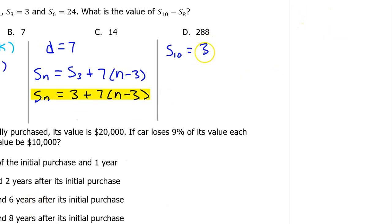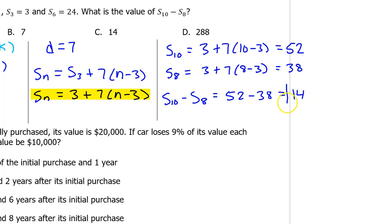S_10 will equal 3 plus 7 times (10 minus 3), which turns out to be 52. This problem is calculator active, so use the calculator as needed. S_8 will equal 3 plus 7 times (8 minus 3). This is 38, so S_10 minus S_8 will be 52 minus 38, which is 14. So the answer is C.